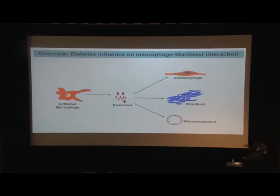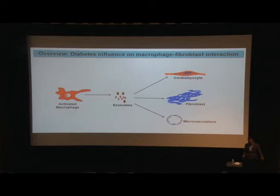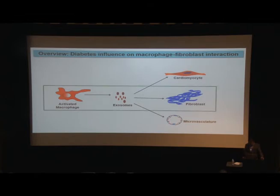The overview of this talk is that we are looking at how hyperglycemia alters macrophage function in terms of their secretion of exosomes, and how that alters mRNA stabilizing protein and its impact on various cell types. Today we are going to focus on macrophage and fibroblast crosstalk through exosomes.